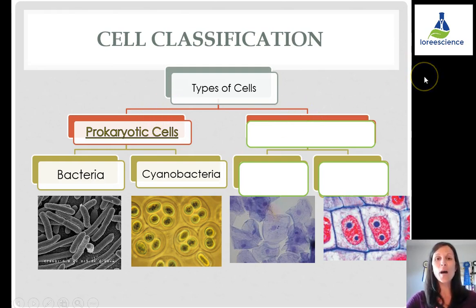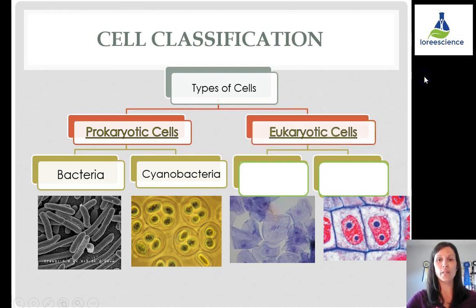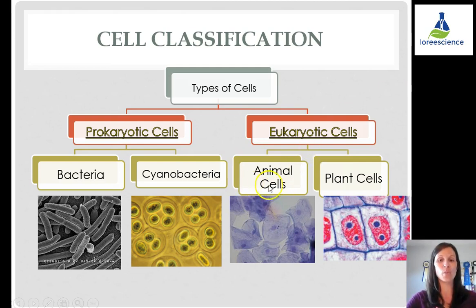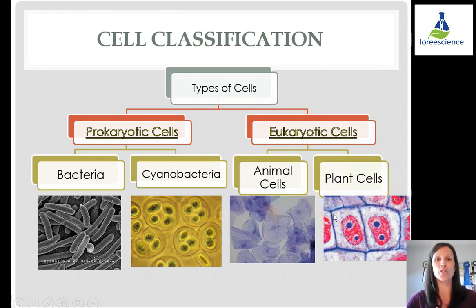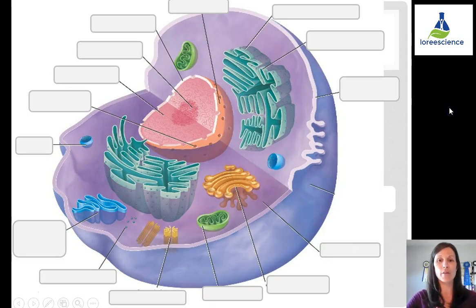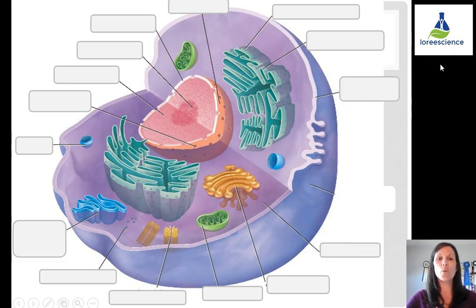The type of cells that do have membrane-bound organelles and a true nucleus are known as eukaryotic cells. The two most common examples are animal and plant cells. Animal cells are generally more rounded in shape, while plant cells have a more rigid structure due to their cell walls. Let's take a look at typical cell diagrams.